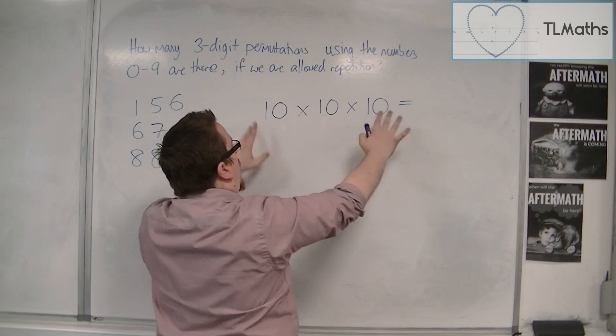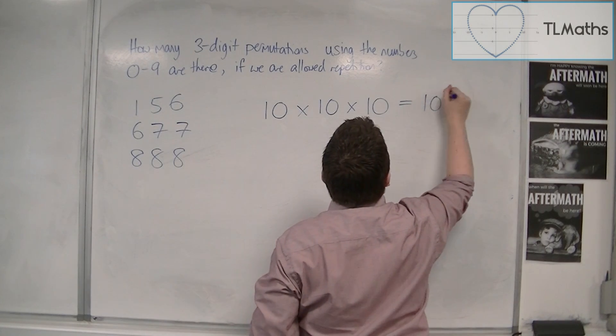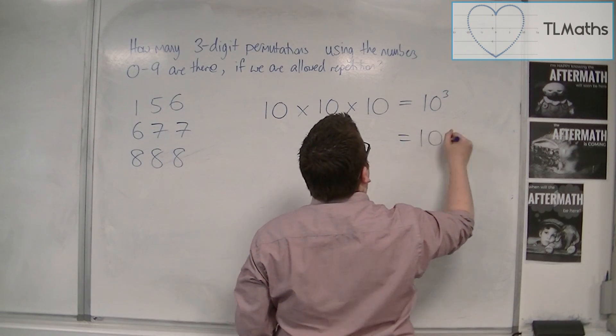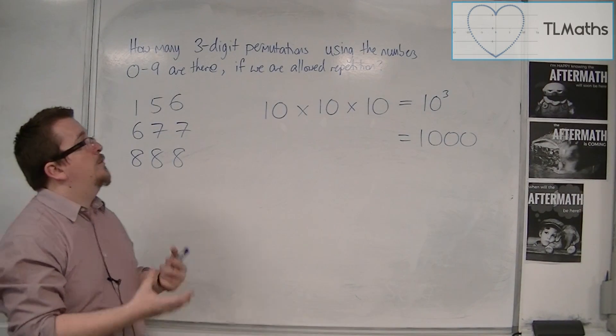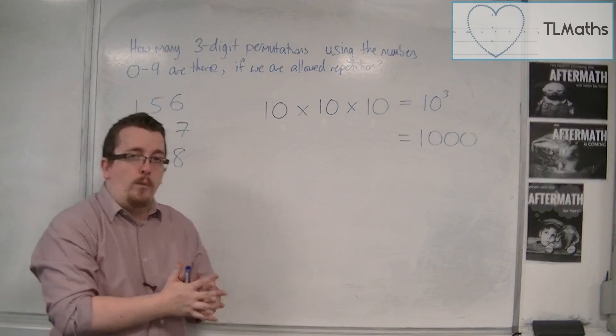And so I will have 10 cubed choices, or 1,000 choices. So there are 1,000 different three-digit permutations in this way.